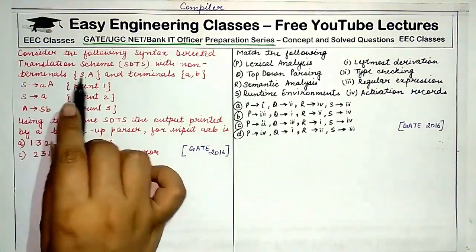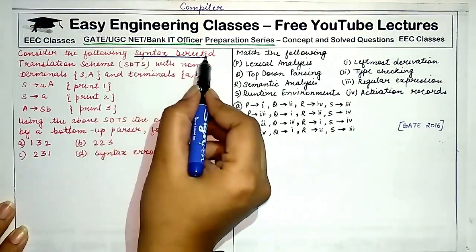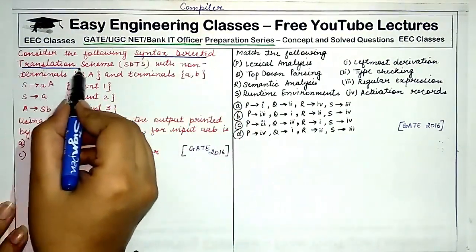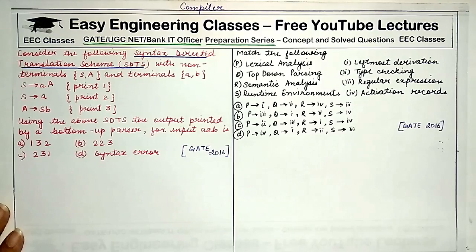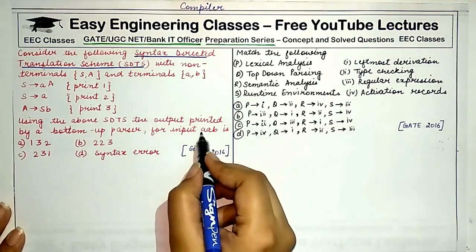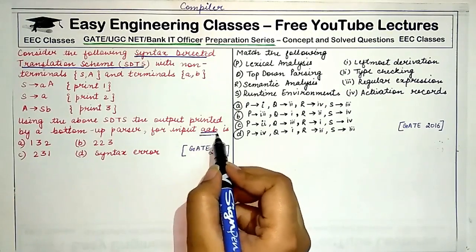The question states: consider the following syntax-directed translation scheme (SDTS) with non-terminals S and A, and terminals a and b. You are given three productions. Using the above SDTS, the output printed by a bottom-up parser for the input AAB is to be determined.